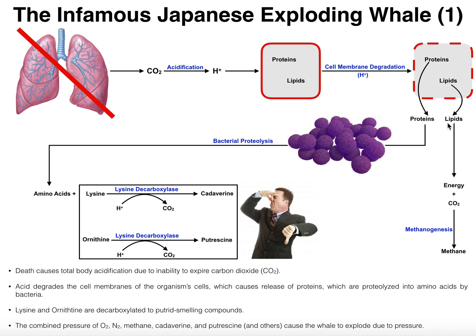The lipids that leak out can actually be metabolized into energy by bacteria. When an organism dies, you have an overpopulation of bacteria. Every mammal has a microbiome — for example, in the human gastrointestinal tract we have tons of bacteria that are helpful and necessary for healthy life. But when the organism dies, there's an overpopulation of these bacteria, and they can actually metabolize those lipids into energy and carbon dioxide.